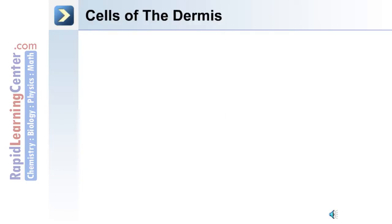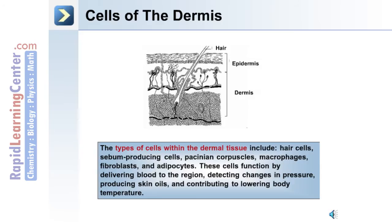The different cell types within the dermis include hair cells, sebum-producing cells, Pacinian corpuscles, macrophages, fibroblasts, and adipocytes. These cells function to deliver blood to the region, detect changes in pressure, produce the oils that are delivered to the surface of the skin, and contribute to lowering body temperature.